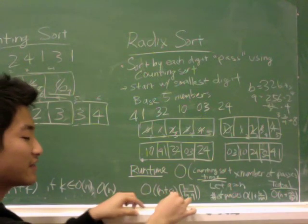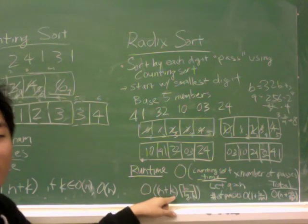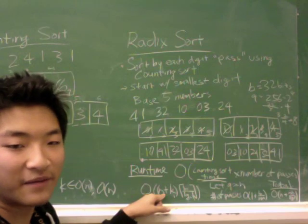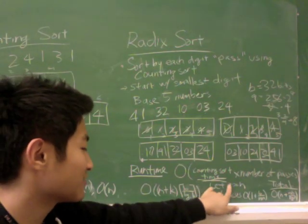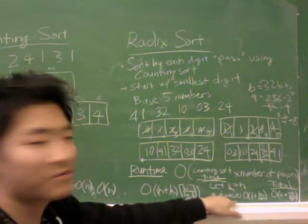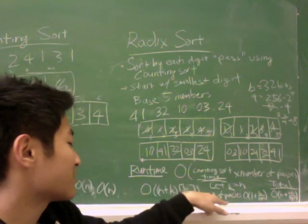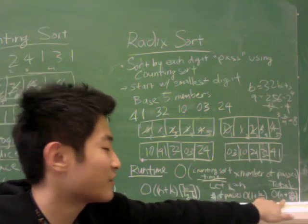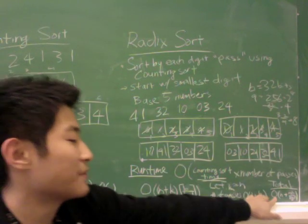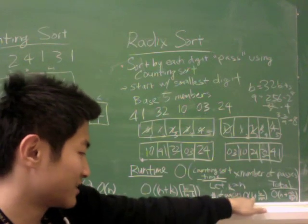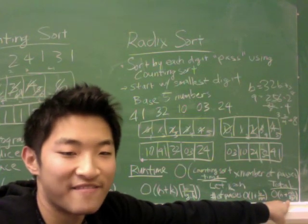So now we have O of N plus K. K is the number of keys, and N is the number of elements. And so we want to choose a K that's approximately N. So let K equal to N. And so the number passes becomes O of 1 plus B over log N. And when you plug that in back here, the K becomes an N. And N plus N is still N in big O notation. And you just distribute that to here and get N plus NB over log N. And that's the total runtime of radix.